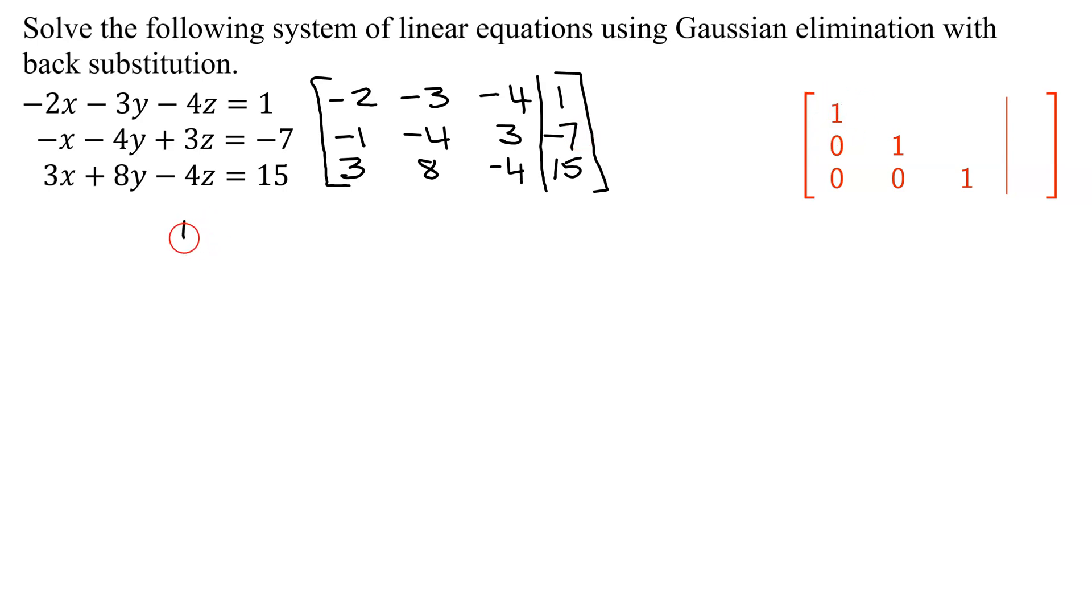So I'm going to do row 1 interchange with row 2, and so my new row 1 is going to be negative 1, negative 4, 3, and negative 7. My new row 2 is my old row 1, so it's negative 2, negative 3, negative 4, 1. Row 3 stays the same at 3, 8, negative 4, and 15.